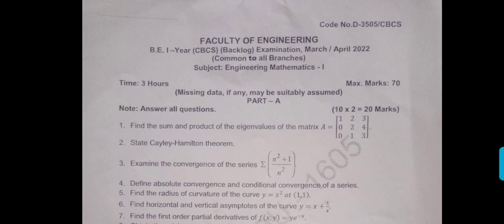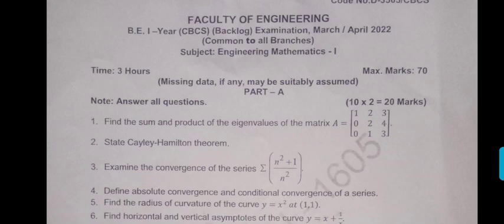So now in this class we have an M1 Usmaniyah University paper. This paper was done two days back, that is on 18th March. So this is CBCS backlog paper.